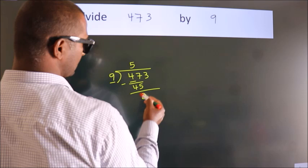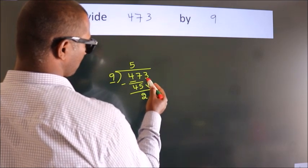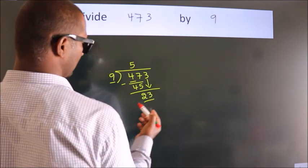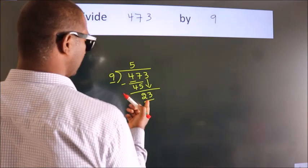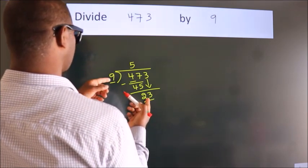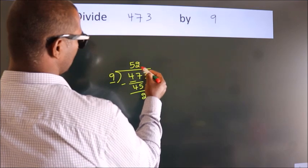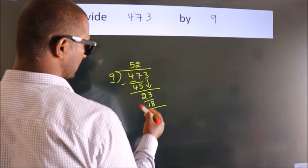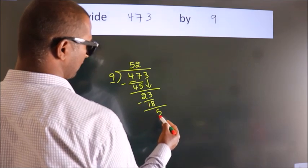After this, bring down the beside number. So, 3 down, giving us 23. A number close to 23 in the 9 table is 9 twos, 18. Now we subtract, we get 5.